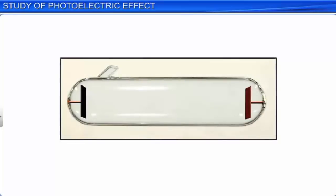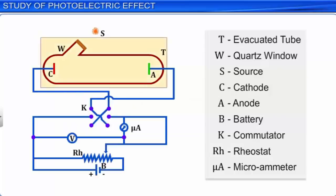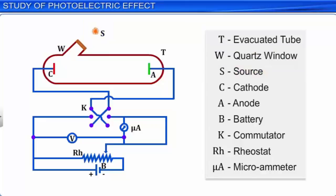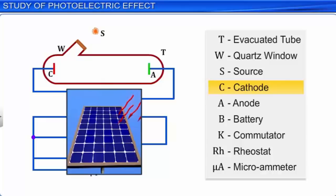Using the apparatus shown, let us study the experiment that explains the photoelectric effect. The apparatus consists of an evacuated glass or quartz tube T, with a transparent quartz window W that permits radiation to pass through it. S is a source of monochromatic radiation. The evacuated tube consists of a photosensitive metal plate C, called the emitter plate or the cathode plate. This is similar to the functioning of the solar cells in a solar panel.